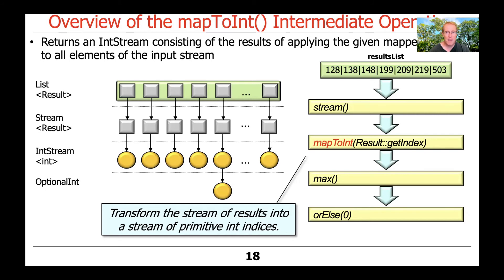So what we're going to do here is we're going to take the stream of result objects, and we're going to call mapToInt, and we're going to end up with a stream of ints, primitives, that indicate the index where a match was found. And then we're going to do some other stuff to it, like we're going to compute the max value from that. We'll talk about that later when we look at some of the code.